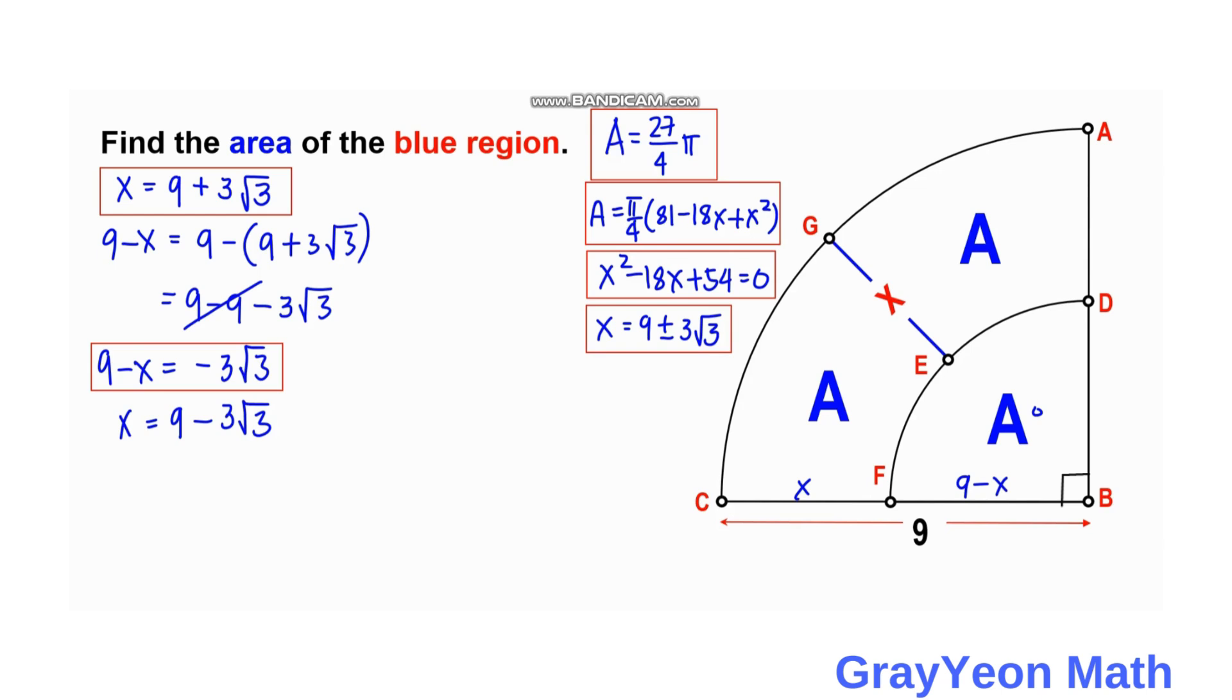And now for the second instance, X equals 9 minus 3 square root of 3. And if we get the value of 9 minus X, it equals 9 minus 9 minus 3 square root of 3. And we simplify, we have 9 minus 9 plus 3 square root of 3. And with this value, the value of 9 minus X will be 3 square root of 3.